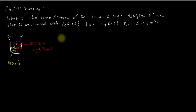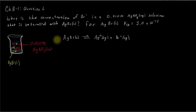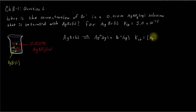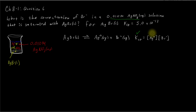We can represent that equilibrium with a dissolution reaction showing how silver bromide is in equilibrium with its aqueous ions. One mole of silver bromide gives one mole of silver and one mole of bromide. We can write down the Ksp equilibrium constant expression: it's the concentration of silver raised to the first power times the concentration of bromide raised to the first power, because of the stoichiometry. We know the Ksp value, and because we know the molarity of the silver nitrate, we know the silver ion concentration — so we need to solve for the bromide concentration.